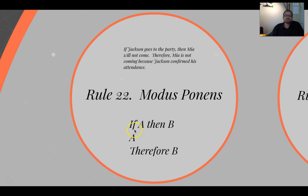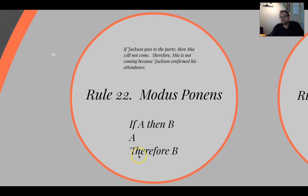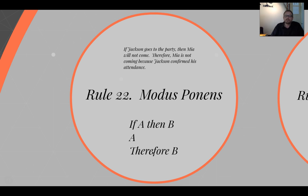In each of these cases, I've given 'therefore' as my conclusion indicator term. Someone basically gives a conditional statement: if this occurs, then something else will occur; this is occurring, therefore something else is going to happen. That's a basic valid argumentative form. Here's an example I made up: if Jackson goes to the party, then Mia will not come. Therefore, Mia is not coming because Jackson confirmed his attendance.